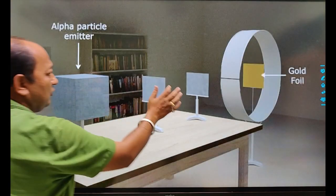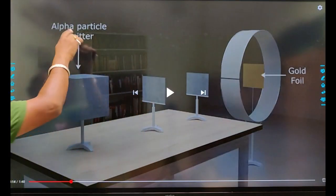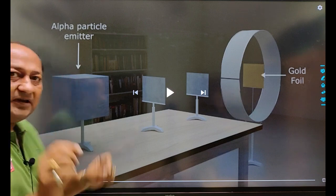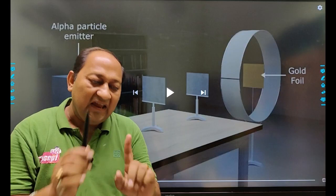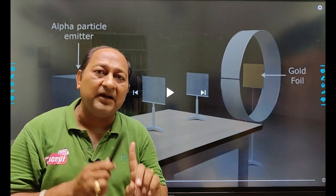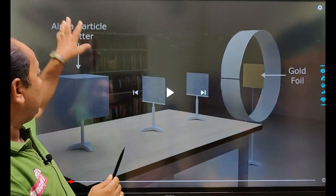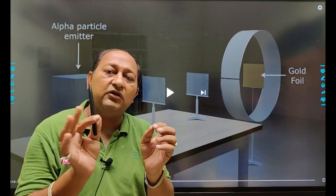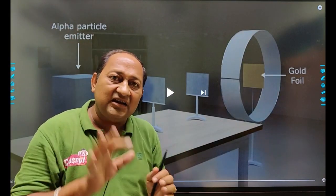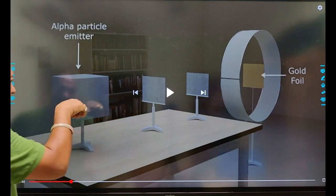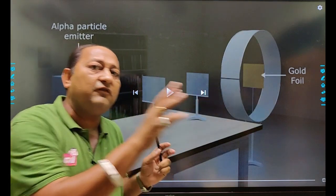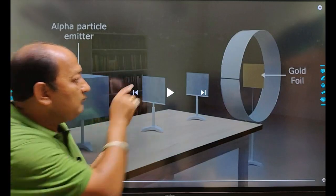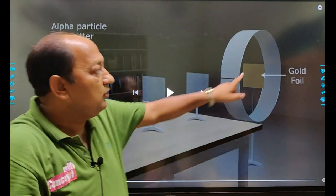In this experiment, there is an emitter of alpha particle. Alpha particles are positively charged particles. This radioactive particle is placed in a lead chamber so that we can increase the intensity of alpha particles which are being bombarded on a gold foil.